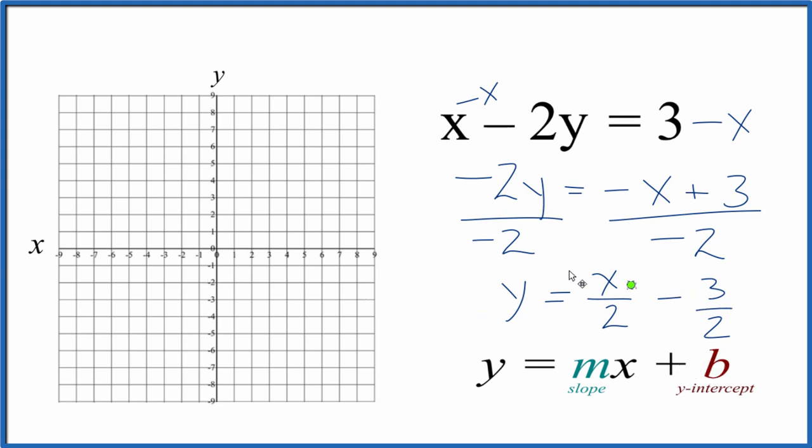Our y-intercept, that's where we cross the y-axis, is negative 3 over 2, which is just negative 1 and a half. So we're going to go down 1 and a half on the y-axis. That's our y-intercept.